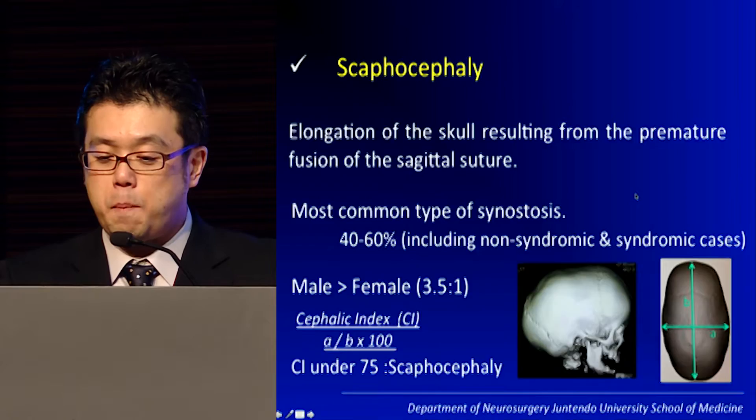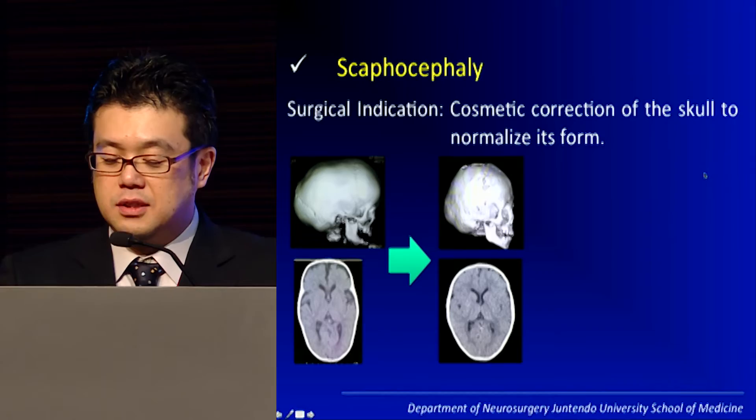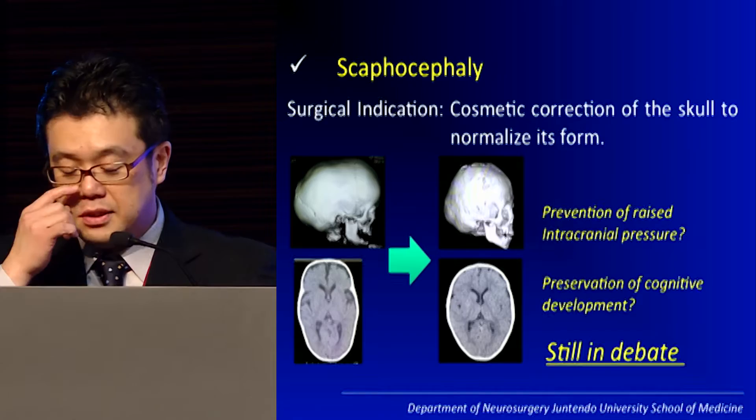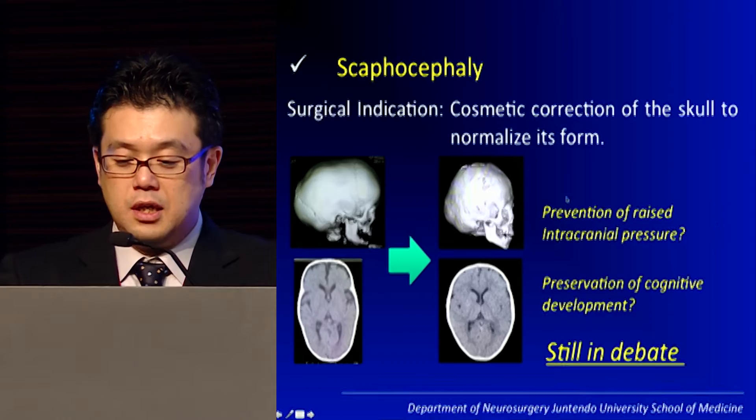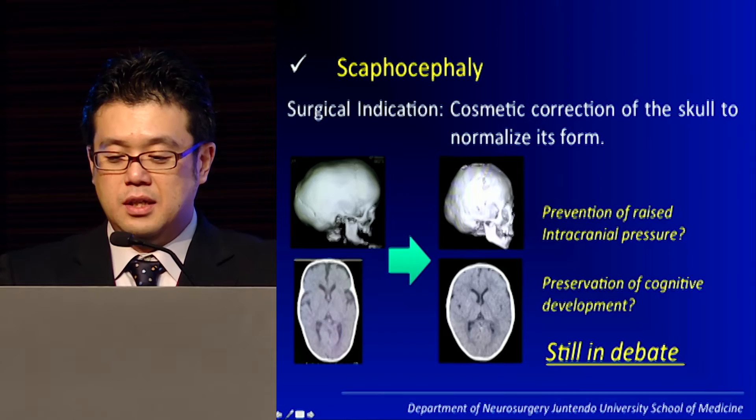The surgical indication is cosmetic correction of the skull to normalize its form. Whether surgery also prevents raised intracranial pressure or preserves cognitive development is still in debate. However, the surgery looks fine after they correct the shape of the skull.